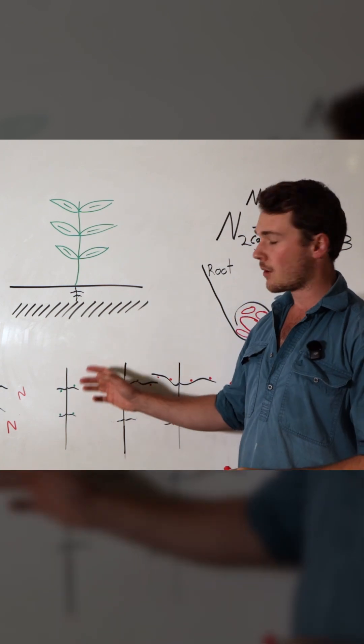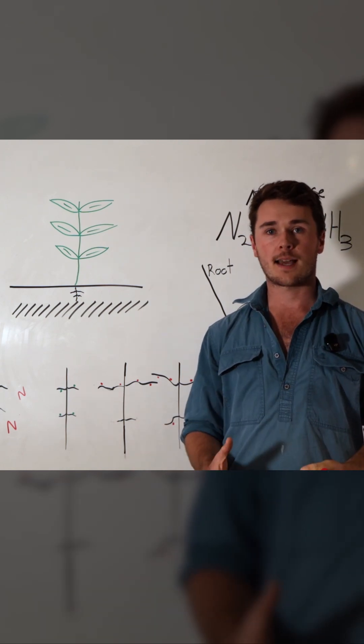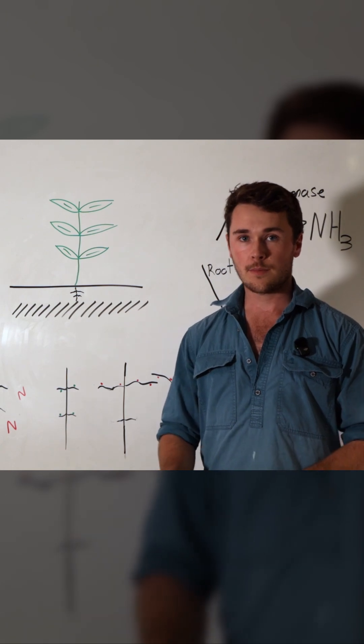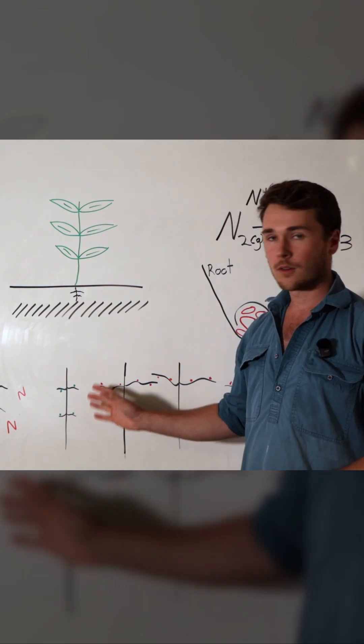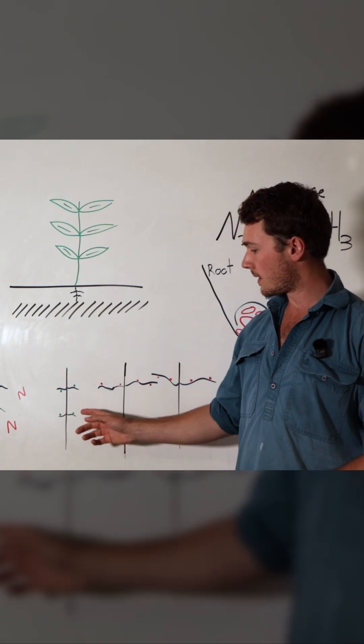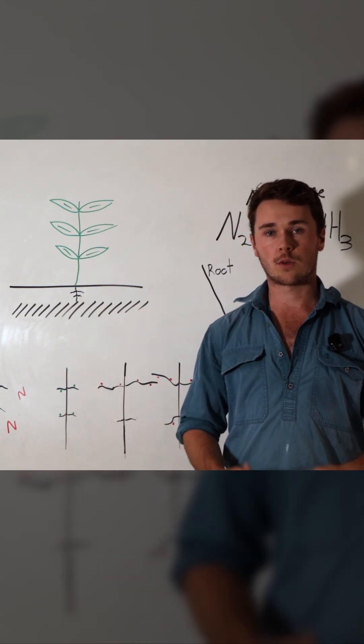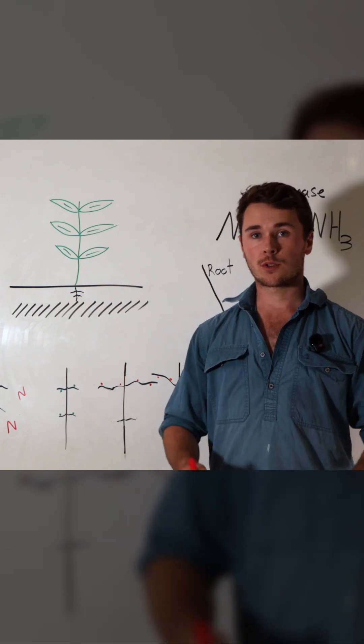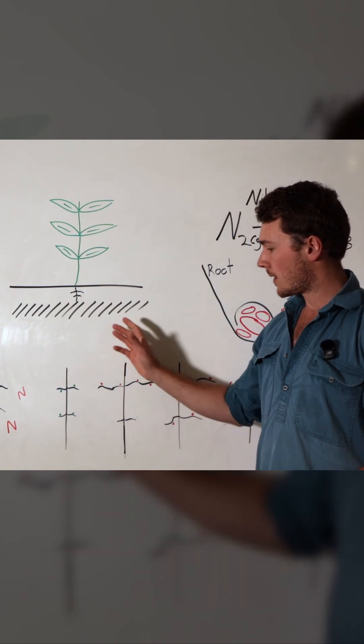When the nodule is either white, green, or brown, it means that the leg hemoglobins aren't there. That could be because there's wrong rhizobia bacteria for the specific legume species. It could also mean that you don't have any iron in your soil or the plant doesn't have iron available to itself. It could also be a nutritional problem.